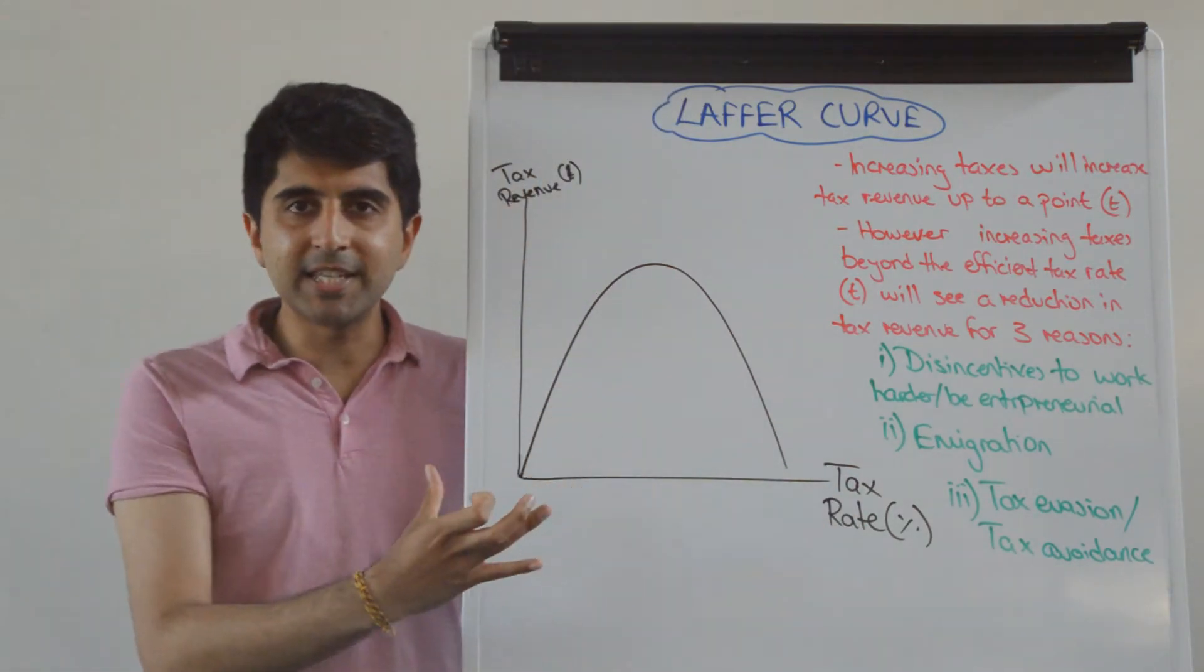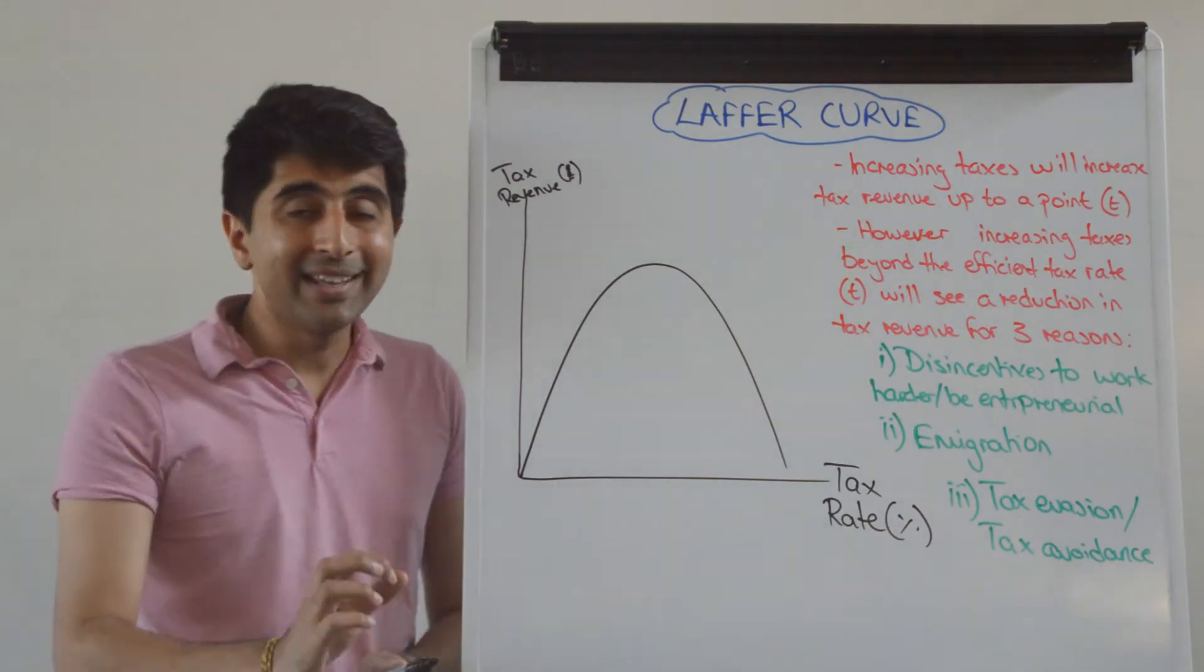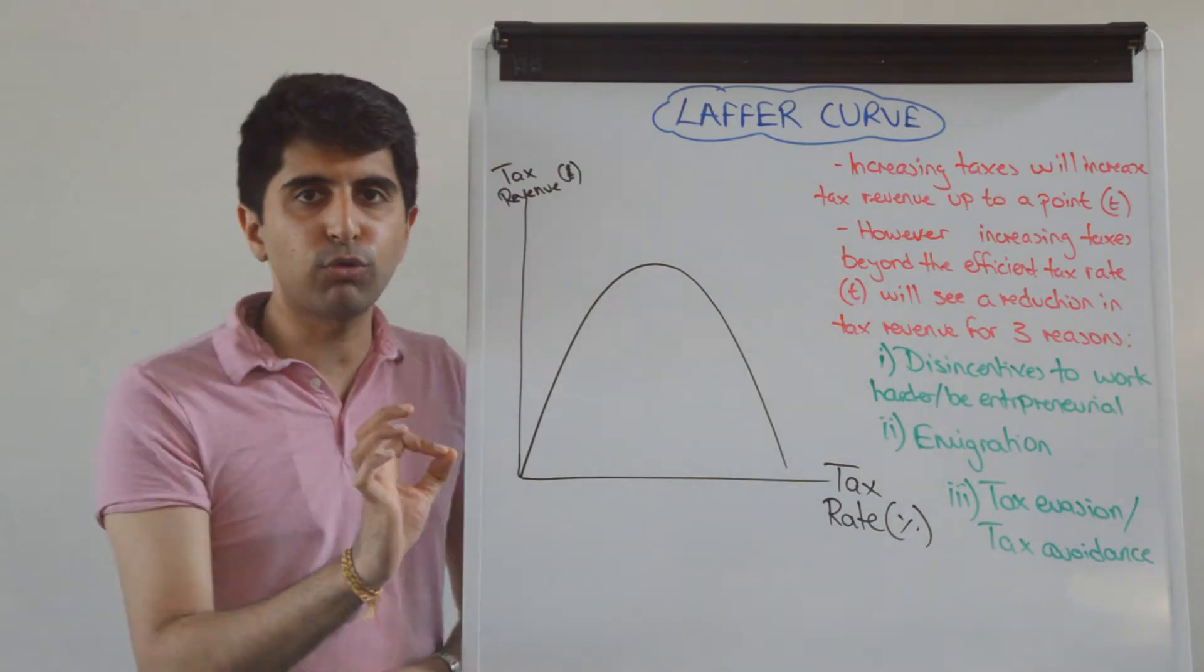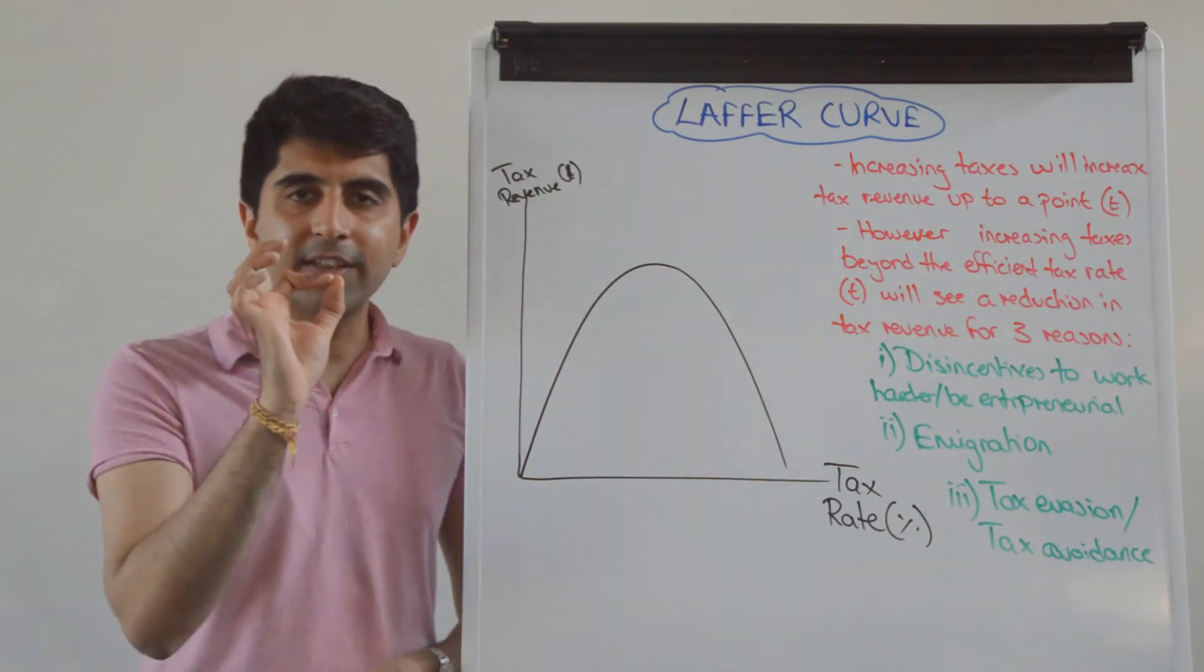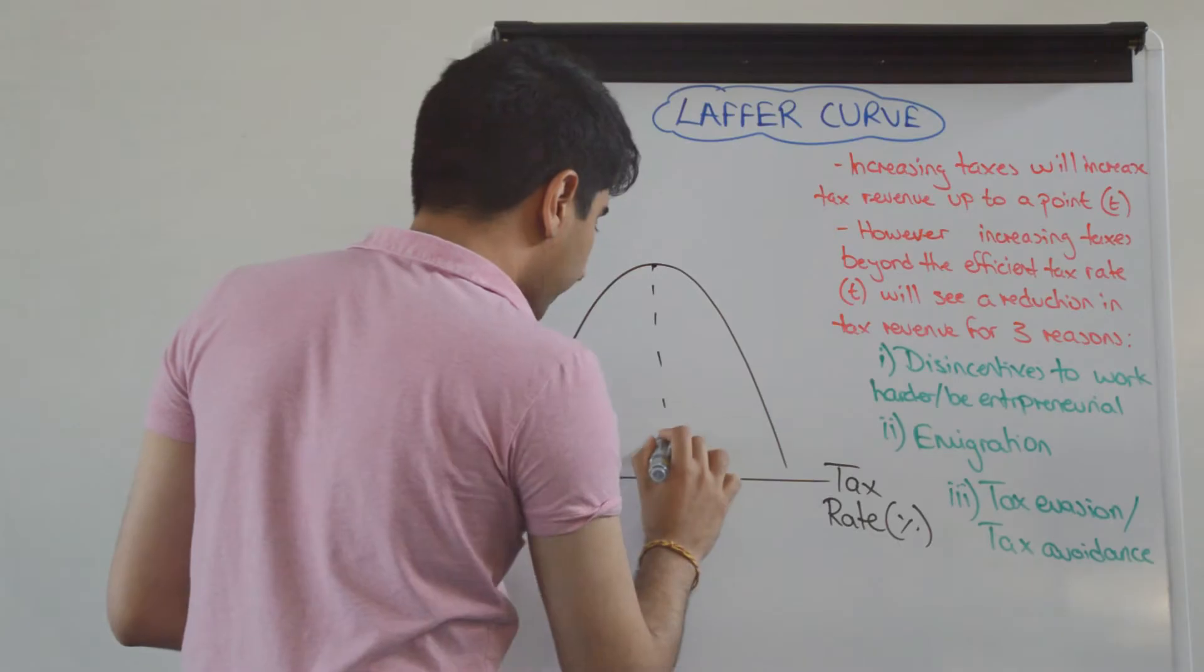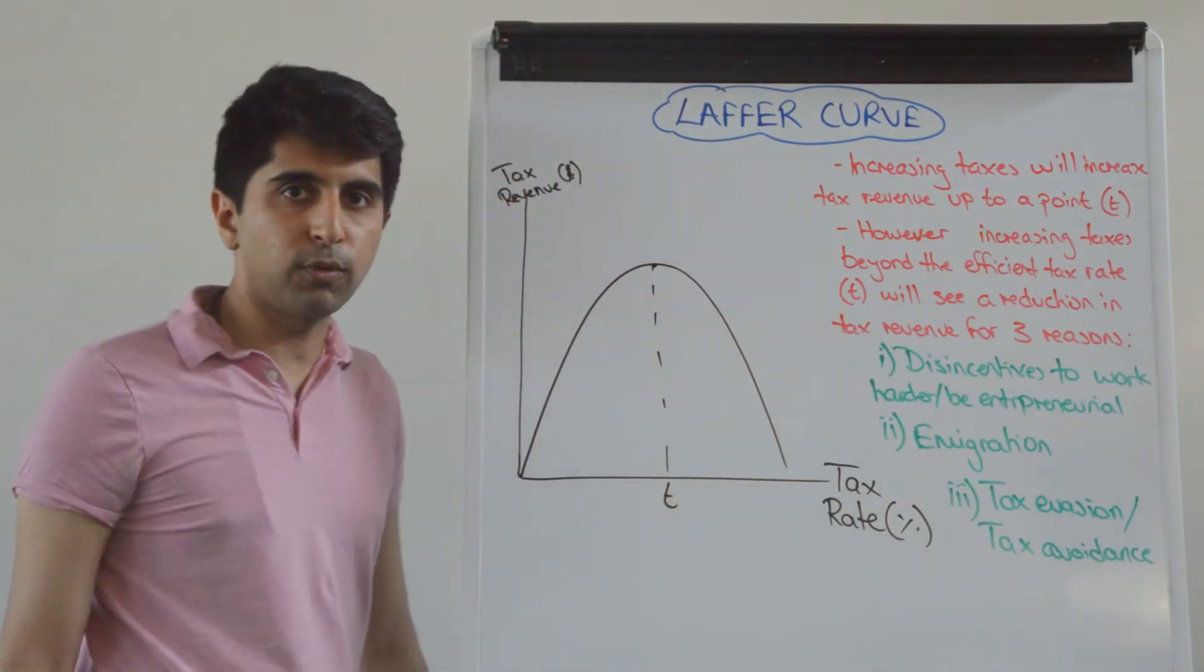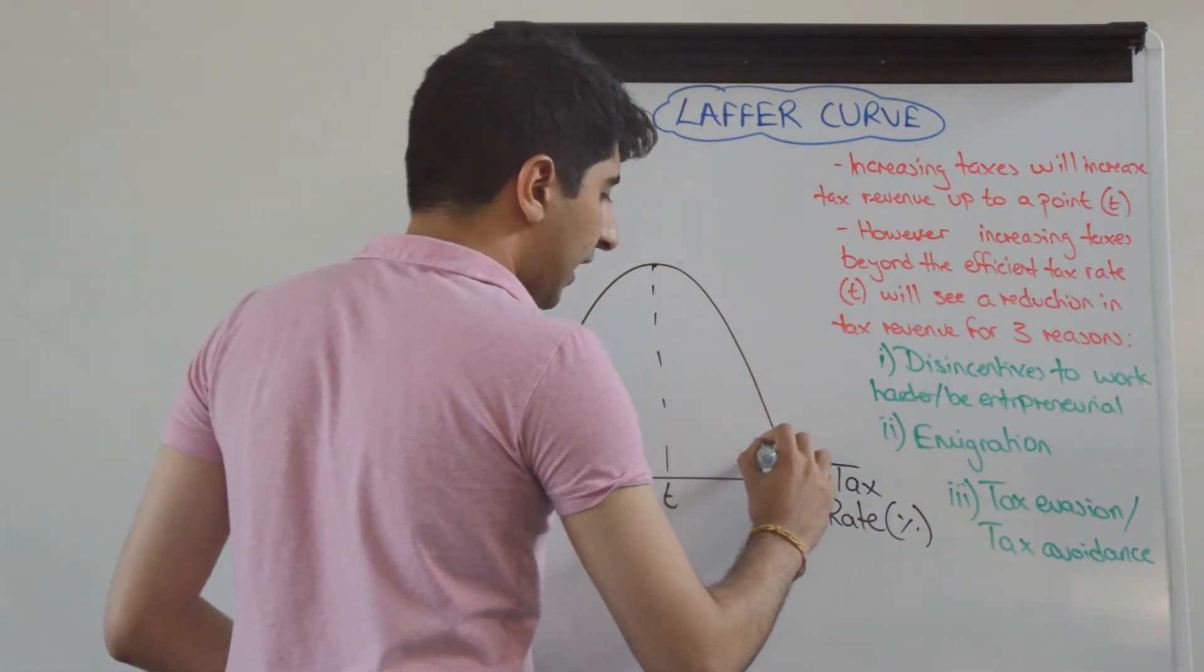This diagrammatically is what Arthur Laffer said and he said that there comes a point where the government reaches an efficient tax rate and at that tax rate the government is maximizing the tax revenue collected by that tax. And on this diagram, that occurs when the tax revenue collected is at its maximum. The efficient tax rate is T. So what we've just drawn here is our Laffer curve.